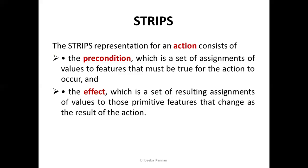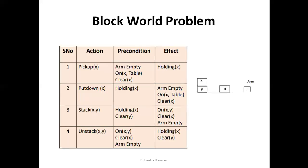STRIPS has representations for initial state, goal state, and all possible actions. For each action we have a precondition — what prerequisites must be satisfied before executing the action. For example, if I want to place something on top of A, the top of A should be clear and the arm head should be holding something. The effect describes what will happen after the action is performed.